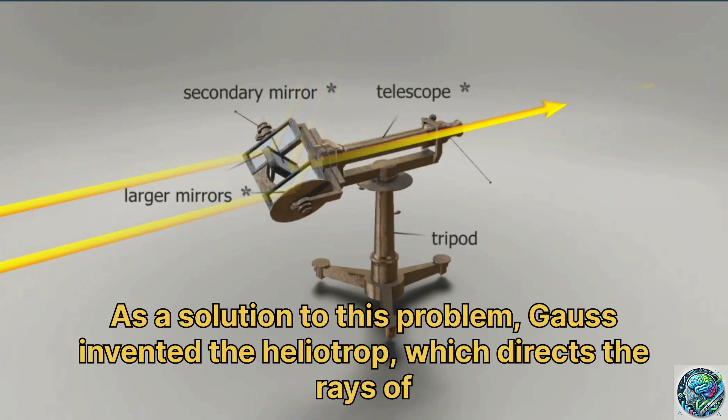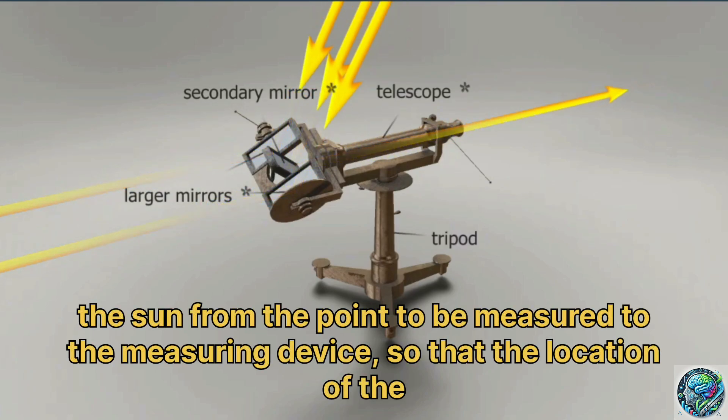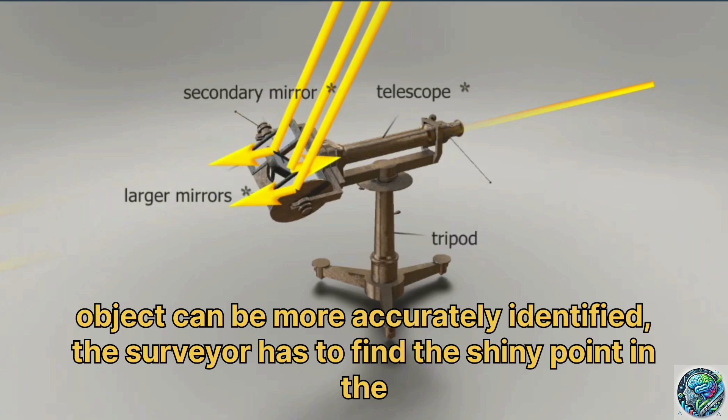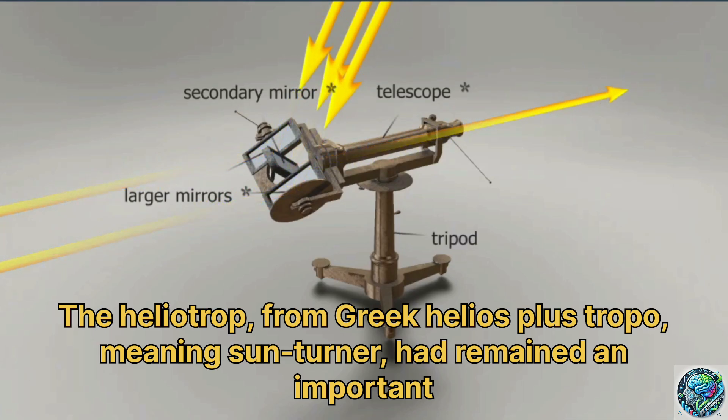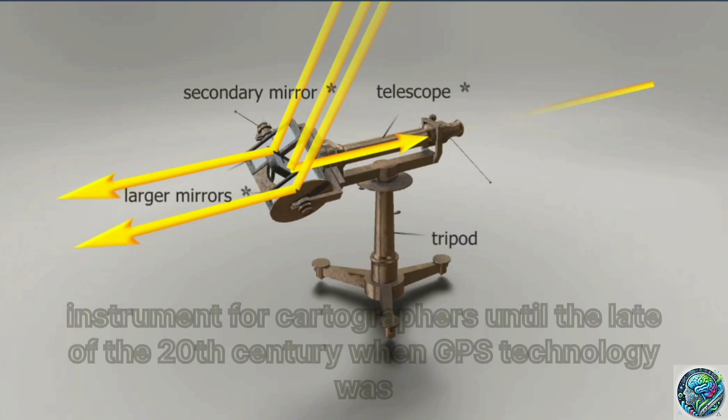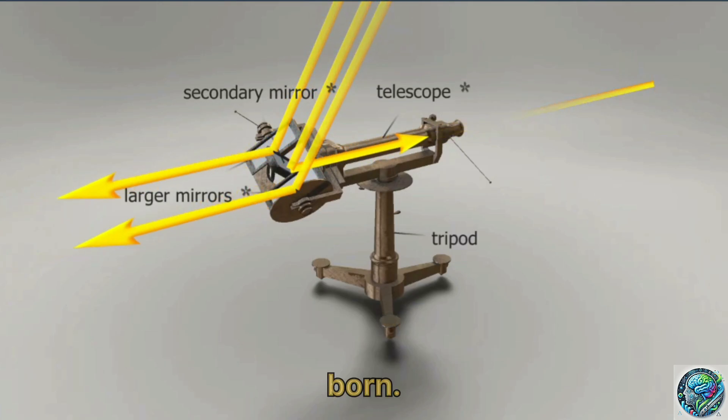As a solution to this problem, Gauss invented the heliotrope, which directs the rays of the sun from the point to be measured to the measuring device, so that the location of the object can be more accurately identified. The surveyor has to find the shiny point in the distance. The heliotrope, from Greek helios plus tropo, meaning sunturner, had remained an important instrument for cartographers until the late 20th century when GPS technology was born.